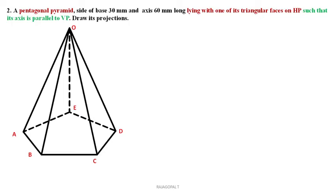Now check what is the pentagonal pyramid. Here OAB is one triangular face, OBC is another triangular face, OCD is another triangular face. Similarly, we are having five triangular faces. The question states: base 30mm, axis 60mm long, lying with one of its triangular faces on HP such that its axis is parallel to VP. We can take OBC. If OBC triangular face is on HP, BC must touch the HP plane.